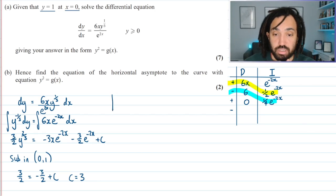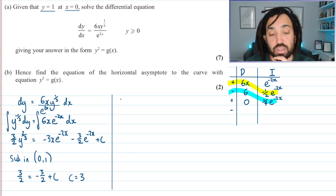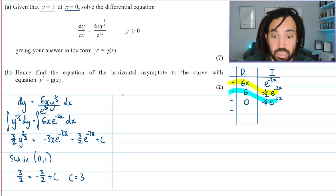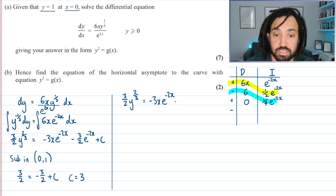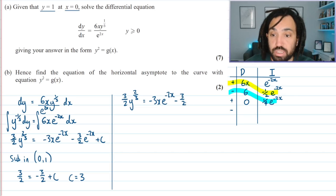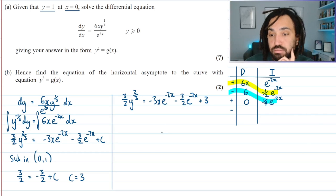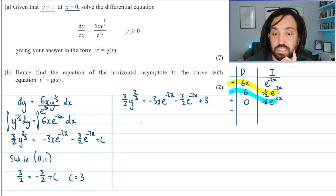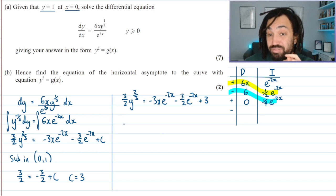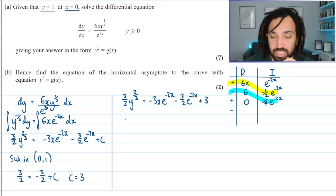Right, let's carry on over here. So now I can just rewrite my expression including c now. So 3 over 2 y to the 2 thirds is equal to minus 3x e to the minus 2x minus 3 over 2 e to the minus 2x plus 3. So what am I going to do next? I'm going to divide everything by 3 over 2, I think. Maybe let's not do that. Let's do that step by step.